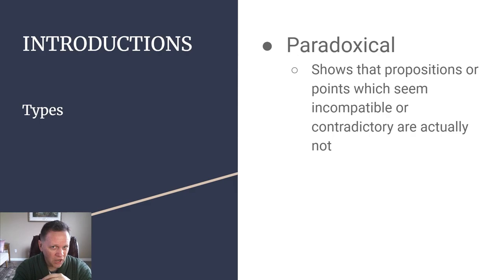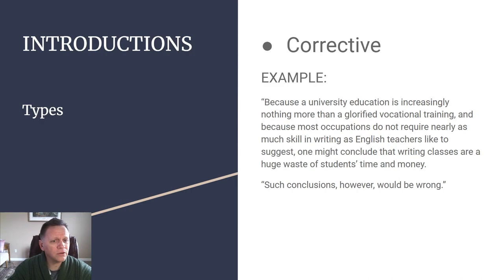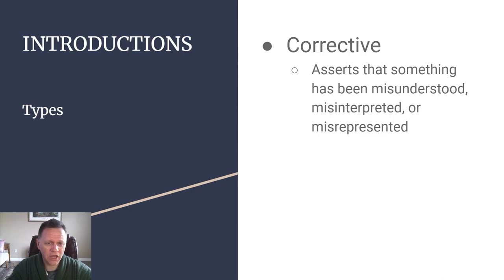A corrective introduction asserts that something has been misunderstood, misinterpreted, or misrepresented. For example: 'Because a university education is increasingly nothing more than glorified vocational training, and because most occupations do not require nearly as much skill in writing as English teachers like to suggest, one might conclude that writing classes are a huge waste of students' time and money. Such conclusions, however, would be wrong.' The writer begins with an assumption the audience might hold and then points out that assumption is wrong.